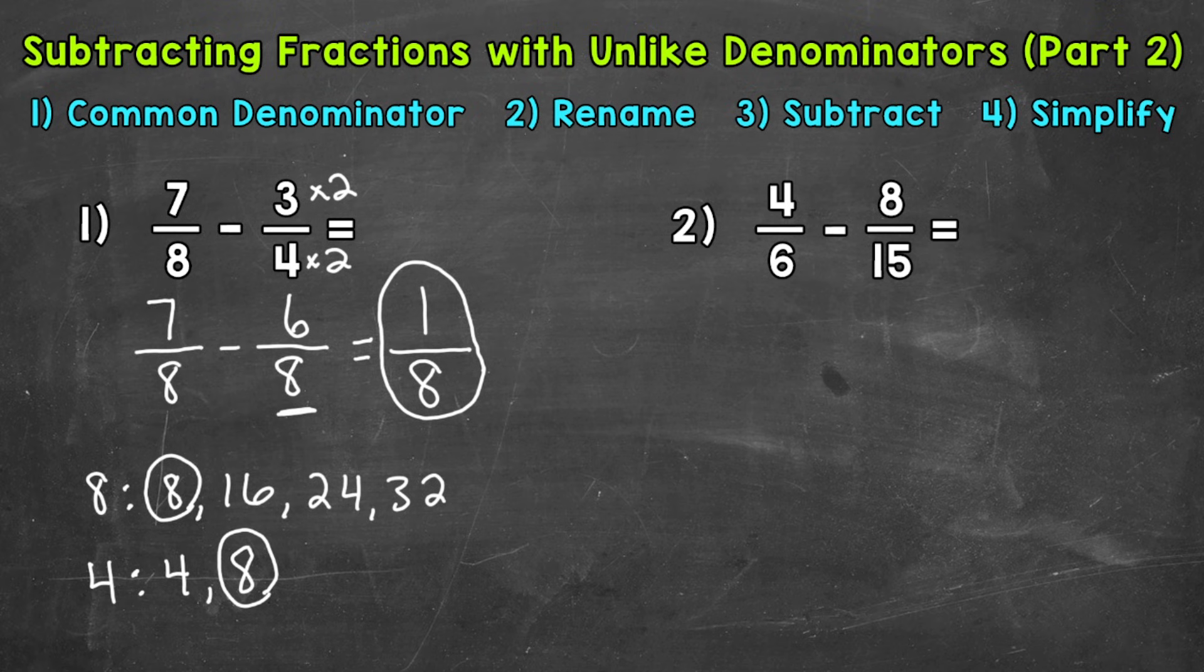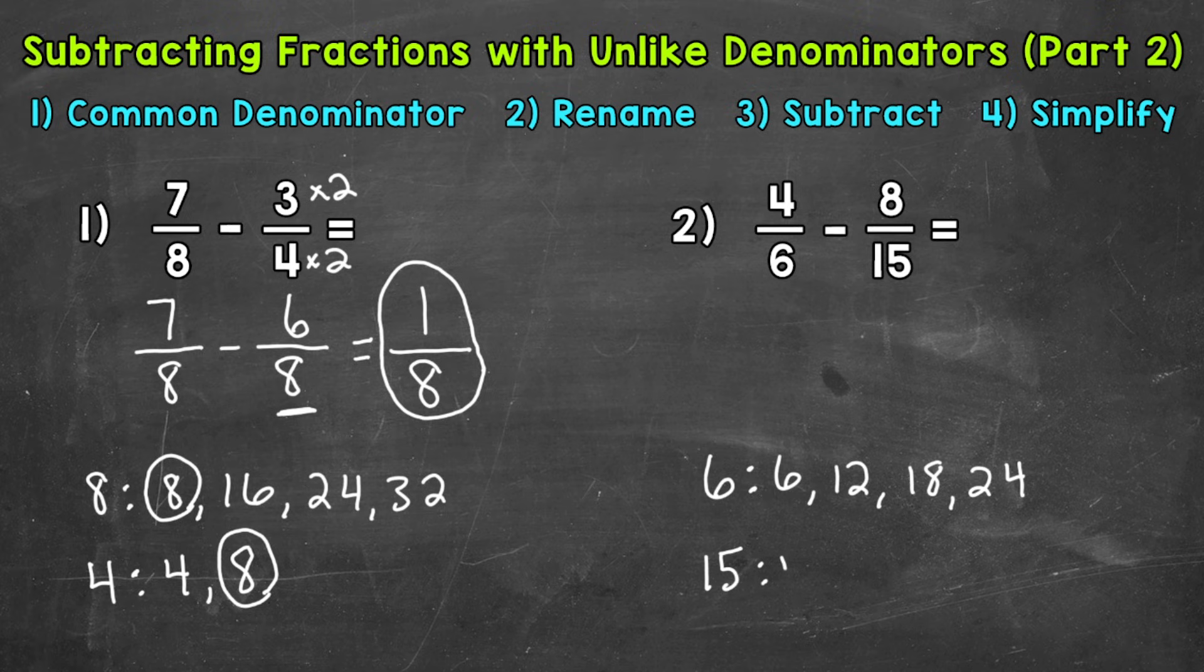We'll start with 6 and we'll write out 4 multiples. So 6, 12, 18, 24. All right, let's do 15 now. So 15, 30, 45, 60. And we do not have any common multiples.